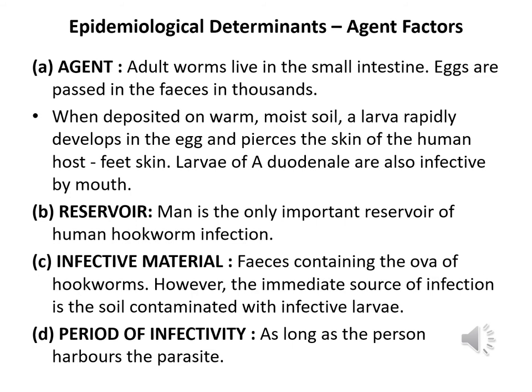Regarding the epidemiological determinants of hookworm, the agent — adult worms — lives in the small intestine. Eggs are passed in the feces in thousands, and when these eggs are deposited on warm, moist soil, larvae rapidly develop and pierce the skin of the human host. Larvae of Ancylostoma duodenale can also be ingested by mouth. Man is the only important reservoir of human hookworm infection. The infective material is feces containing the ova of hookworms; however, the immediate source of infection is the soil contaminated with infective larvae. The period of communicability is as long as the person is harboring the parasite.